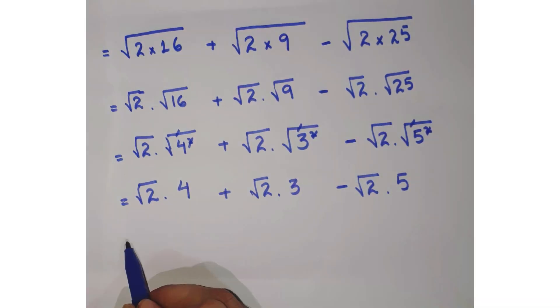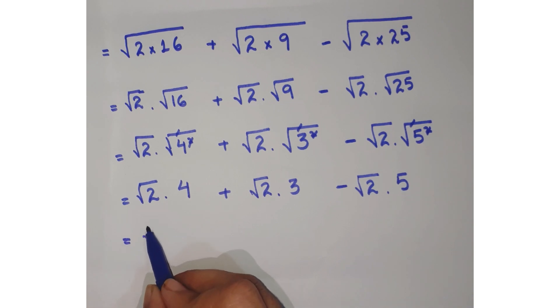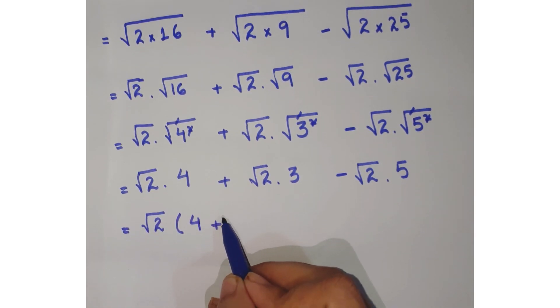Now just take out √2 common, so you get √2(4 + 3 - 5).